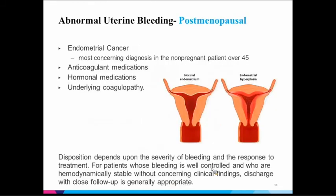Postmenopausal women — the concern is cancer, most commonly endometrial, but also cervical or ovarian cancer. One of the most common consults we get in the hospital for a postmenopausal woman with new onset bleeding is because she's on anticoagulation and, if she's also atrophic, that can incite bleeding. Disposition depends on how much she's bleeding and whether she's hemodynamically stable.